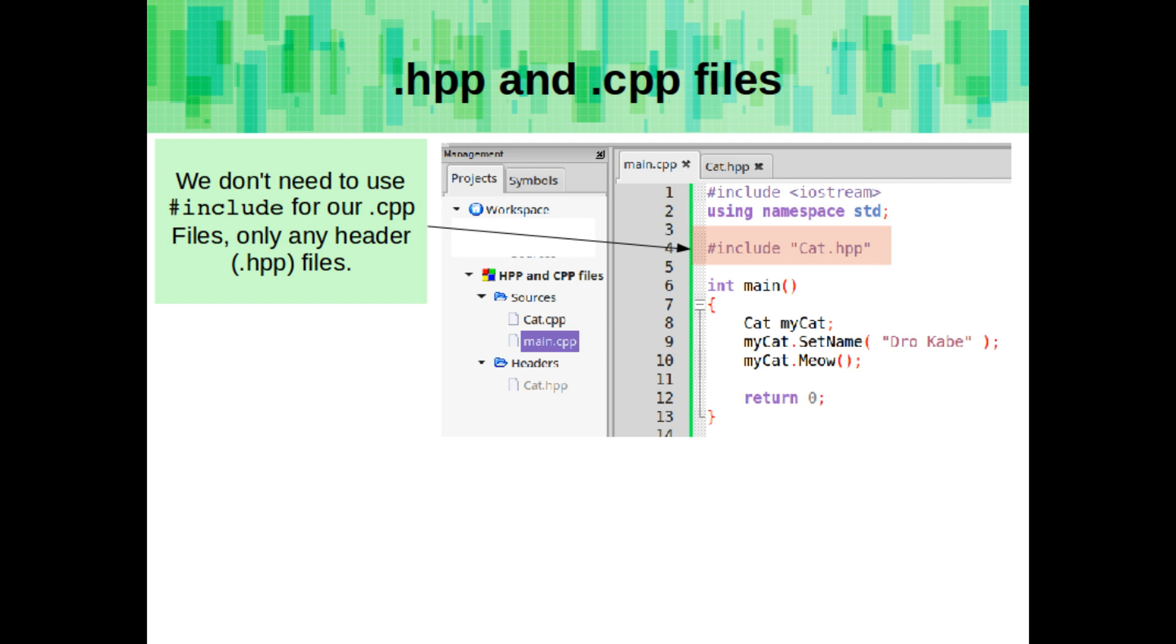If we're using our custom class in any source file, any .cpp file, we need to include the .hpp file for the class that we're using. However, we don't need to include a .cpp file. Those are automatically just part of the program.